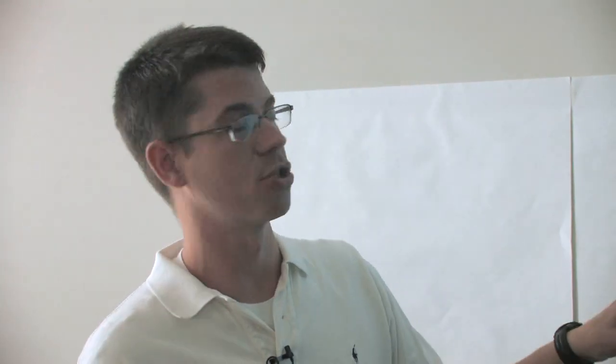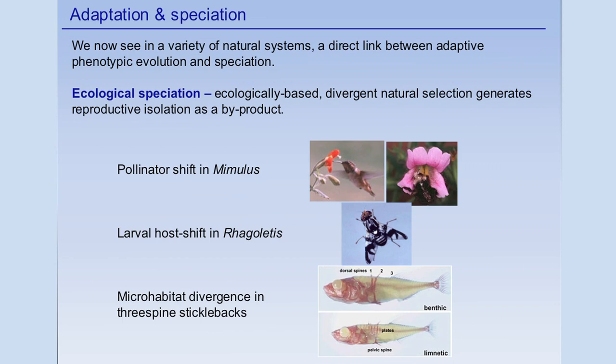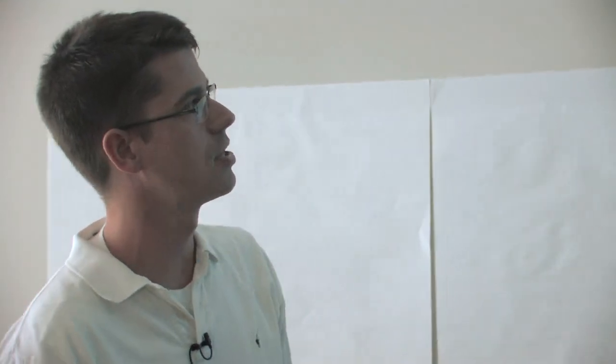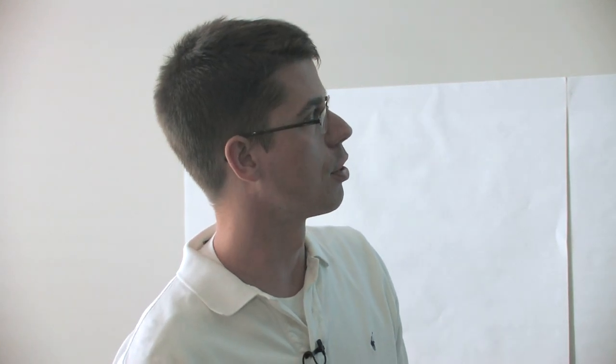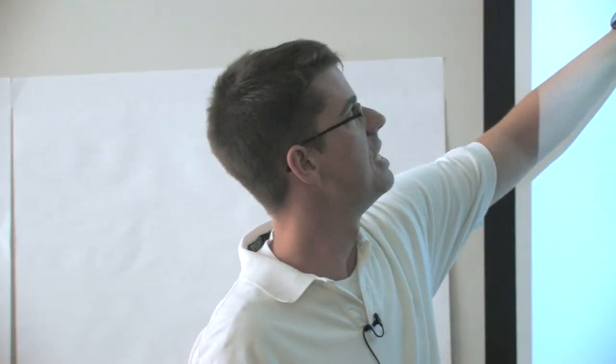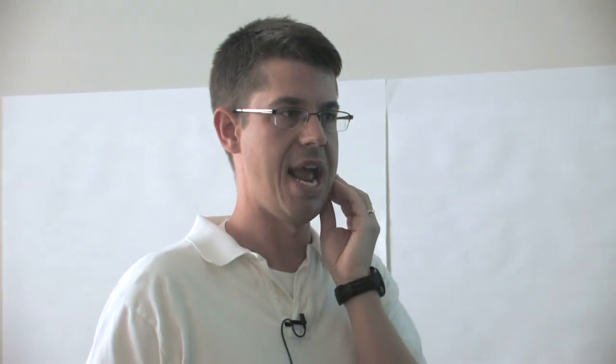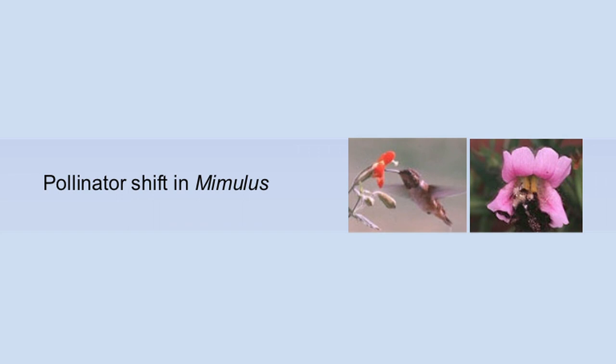There's emerging research on a variety of biological systems showing a direct link between adaptive evolution and speciation. One of the clearest examples is the process of ecological speciation. It's a fancy term for something fairly simple: ecologically based divergent natural selection that generates reproductive isolation as a byproduct. A classic example is the pollinator shift in Mimulus plants — monkey flowers. We've got a variety of very closely related species that have diverged in their flower color and morphology.